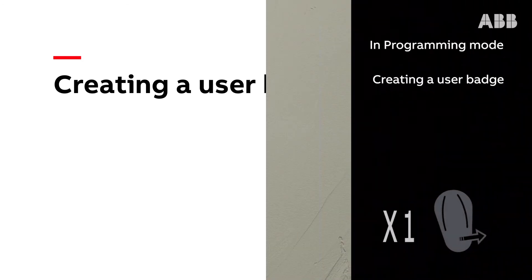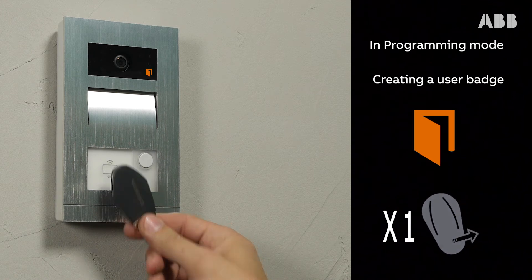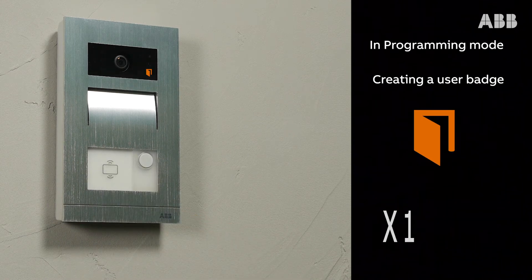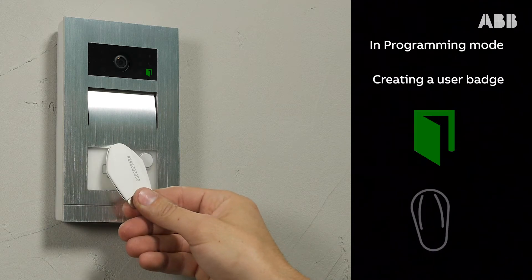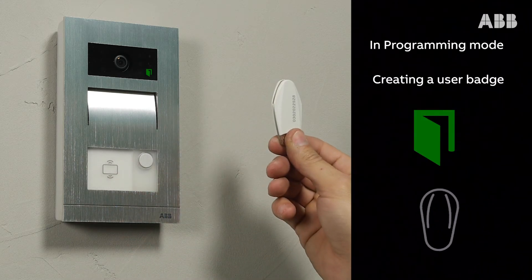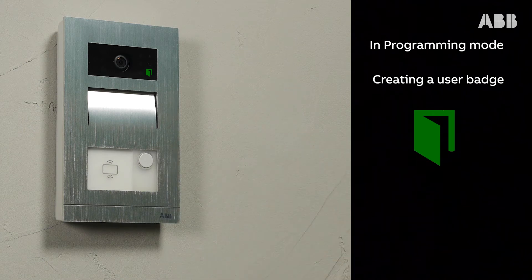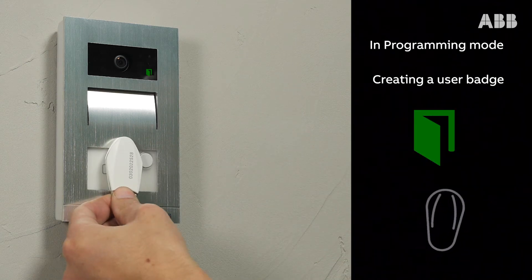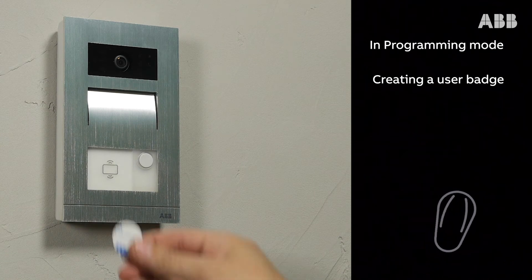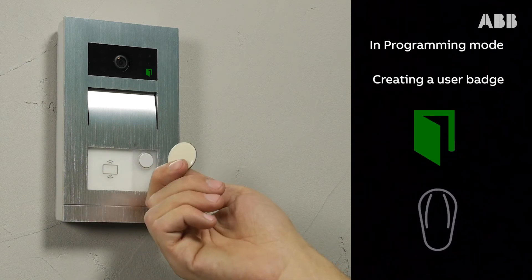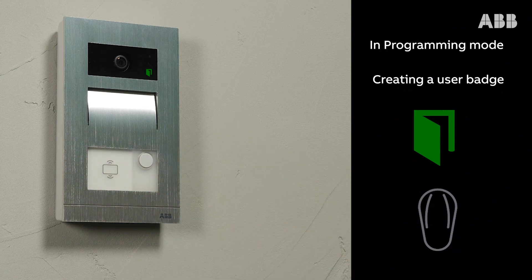To create a user badge, pass the administrator badge once in front of the badge reader. The LED flashes orange once. Then pass the badge that you would like to program as a user badge in front of the badge reader. The LED turns green, confirming your action. Pass another badge in front of the badge reader to repeat this operation if required. The RFID self-adhesive stickers provided in the kit can also function as badges.